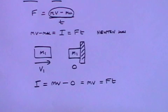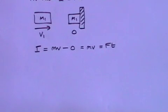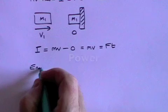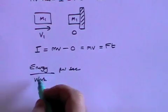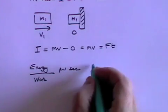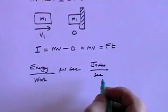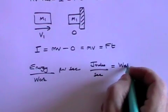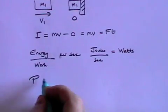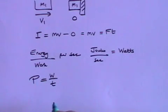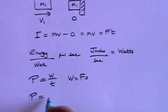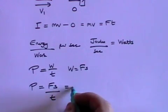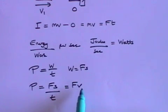I now want to move on to look at power. Power is energy or work per second — energy measured in joules divided by time in seconds. Power is measured in joules per second, which we call watts. So power P equals work divided by time. Since work is force times distance, power is force times distance divided by time. And distance divided by time is velocity, so power is also force times velocity.